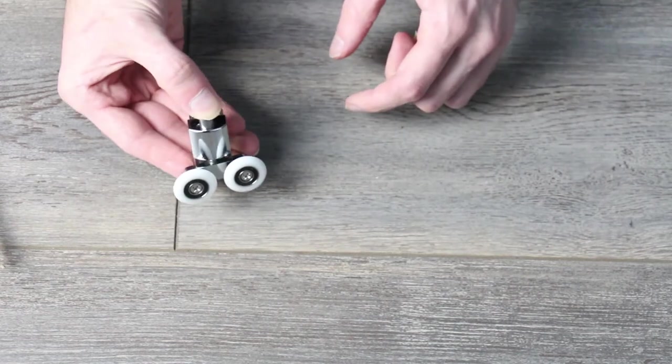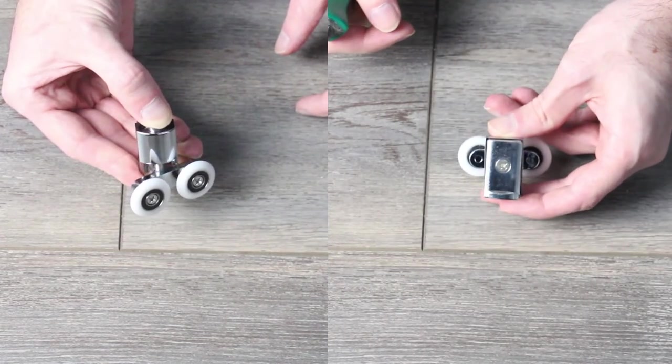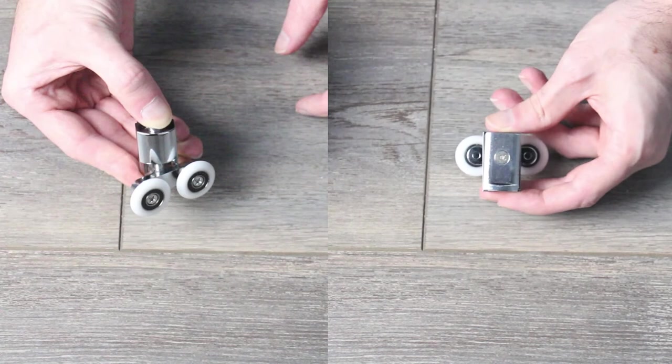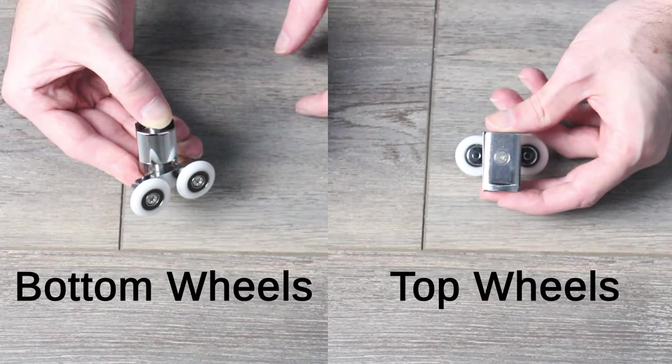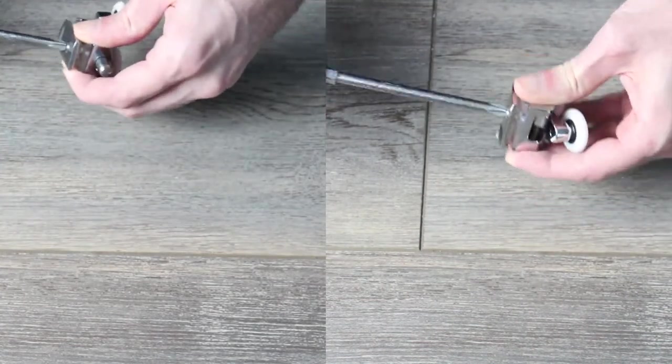There are two types of wheels in your pack. One spring loaded with a push button and one without. The wheels with the push button are for the bottom of the door and the wheels without for the top. On the back of the wheels there is a screw holding it all together. Remove the screw to reveal four parts.